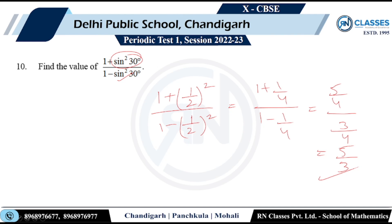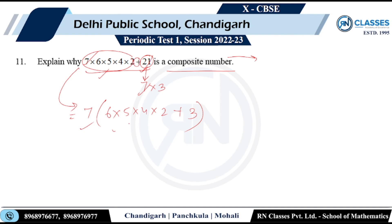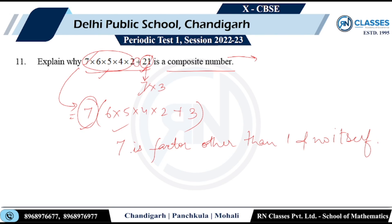Question 12: Explain why a given number is composite. A composite number has a factor other than 1 and itself. Looking at the number, I can write 21 as 7 × 3, so 7 is a factor present in the expression. Taking 7 common, the number can be written as 7 × (some integer). Since 7 is a factor that is neither 1 nor the number itself, the number is composite.